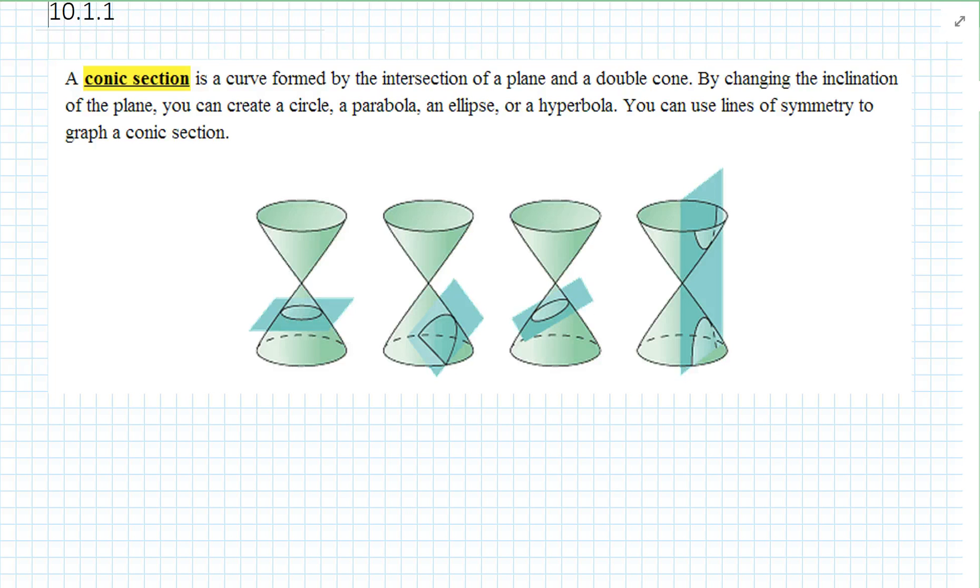By changing the inclination of the plane, you can create a circle. See how we cut the plane straight through parallel. A parabola, we come in at an angle. An ellipse, we come in at an angle and cut through both sides. Or a hyperbola, we go vertical through two edges of the cones.